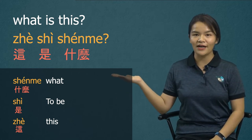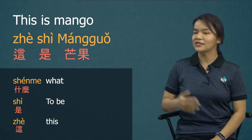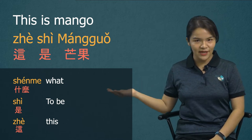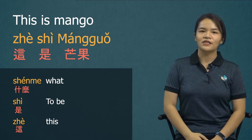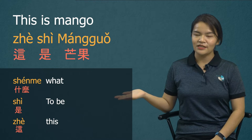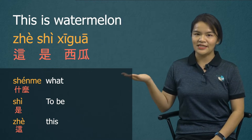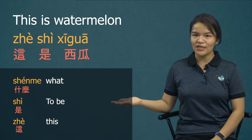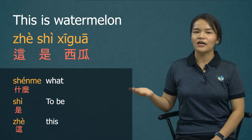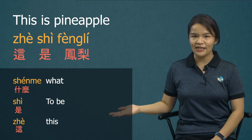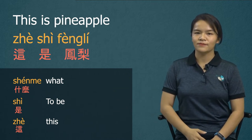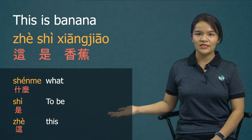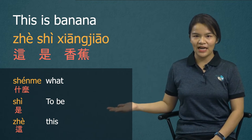这是什么? 这是芒果 — this is mango. 这是什么? 这是西瓜. 这是什么? 这是凤梨. 这是什么? 这是香蕉.